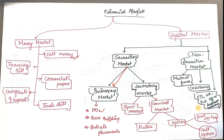Financial markets exist wherever a financial transaction occurs. Financial transactions could be in the form of creation of financial assets such as initial issue of shares and debentures by a firm, or by the purchase and sale of existing financial assets like equity shares, debentures and bonds. So any place where you can create or trade financial assets can be called a financial market.